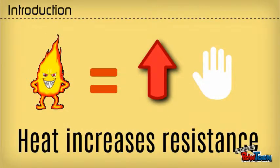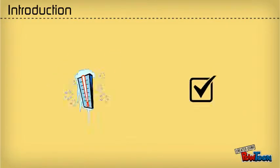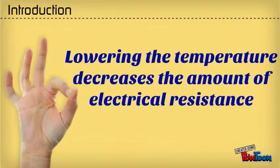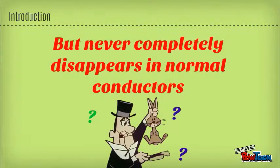We know that heat increases resistance, and cranking down the thermostat ought to decrease it, right? Well, it does within limits. In normal conductors, resistance falls as the temperature drops, but it never completely disappears.